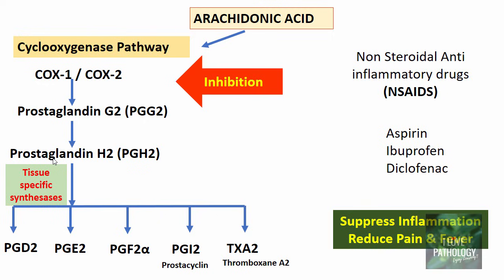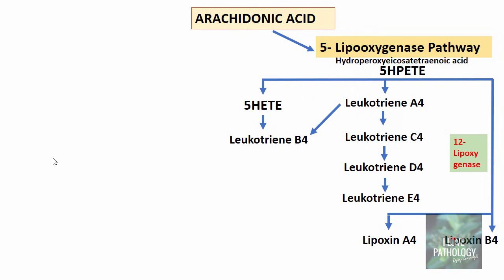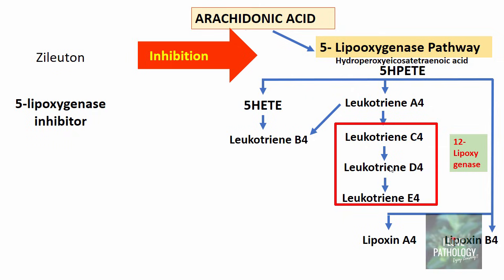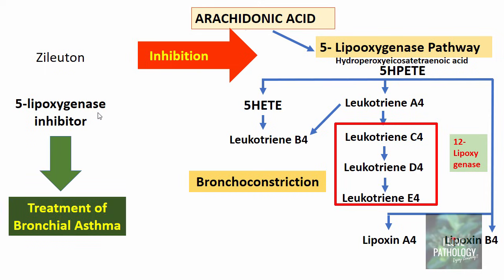Moving on to the second pathway via the lipoxygenase pathway: if there is inhibition of the lipoxygenase pathway, there will be no production of leukotrienes and lipoxins. NSAIDs cannot act on 5-lipoxygenase. The first anti-5-lipoxygenase drug was zileuton. When this drug is given, production of leukotrienes is stopped. Leukotrienes, as we know, are the most important bronchoconstrictors, and bronchoconstriction is the most important mechanism in bronchial asthma, which is a chronic obstructive pulmonary disease. That is why zileuton as a 5-lipoxygenase inhibitor is used in the treatment of bronchial asthma.